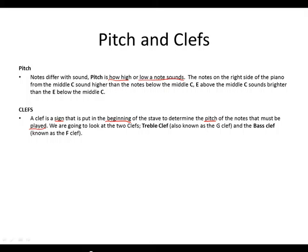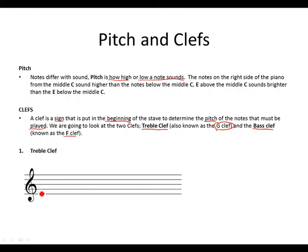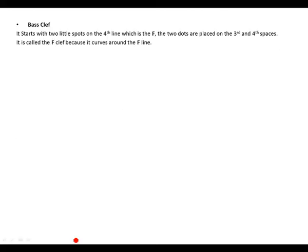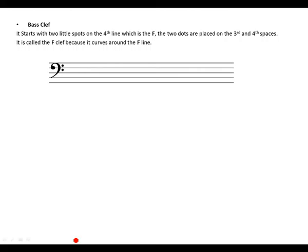We are going to look at two clefs in pre-grade 1: the treble clef, also known as the G clef, and the bass clef, known as the F clef. For the treble clef, the line circulates around the G line and goes up slightly above the staff coming down. For the bass clef, it starts with two dots on the fourth line which is the F. The dots are placed on the third and fourth spaces.